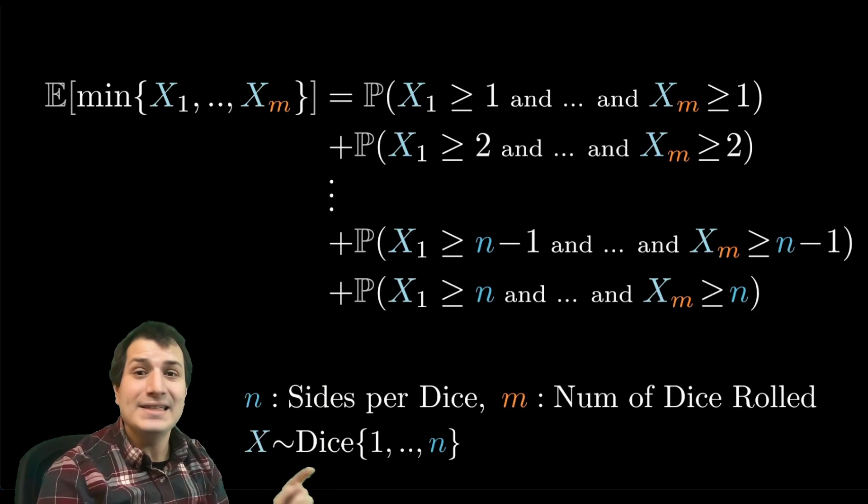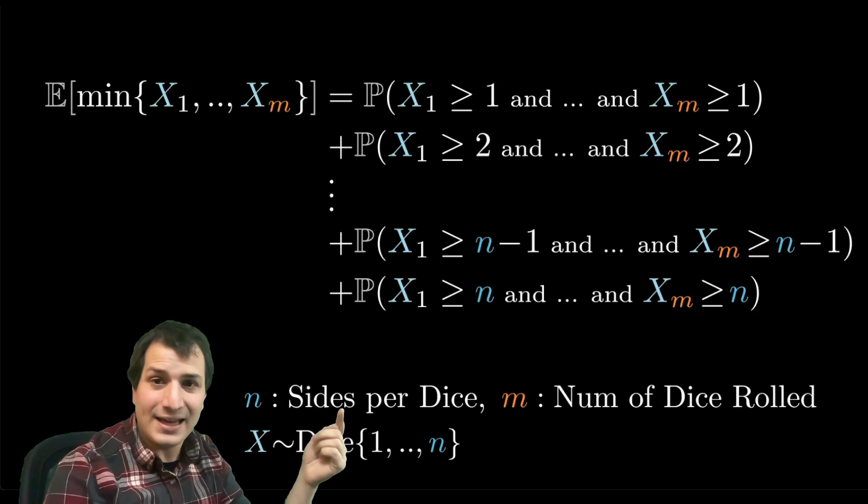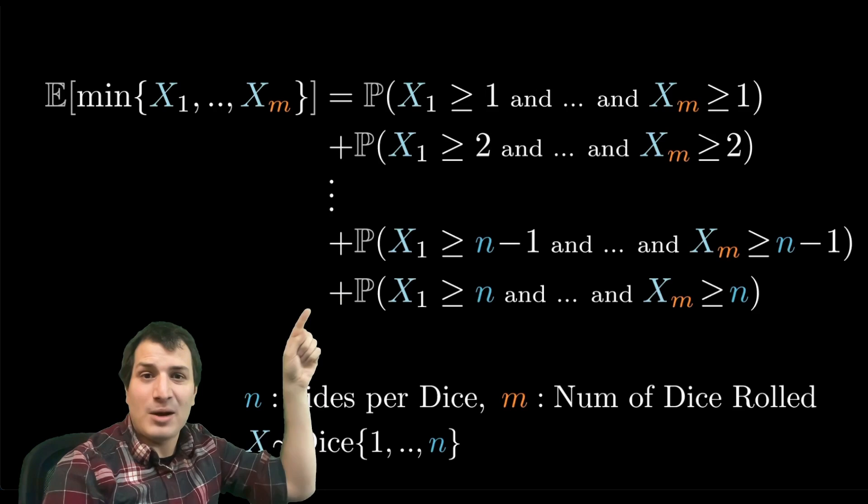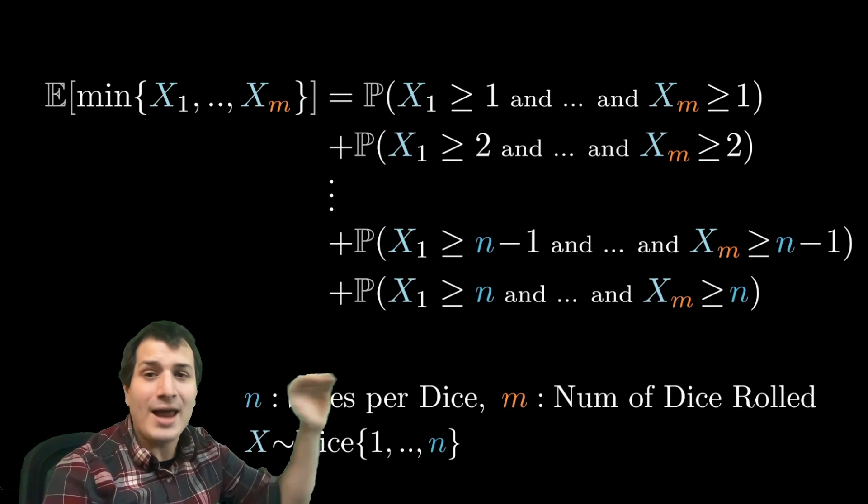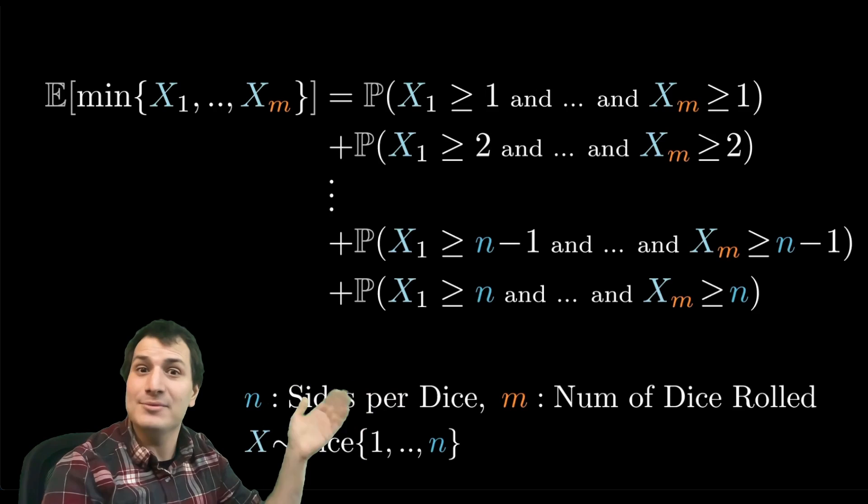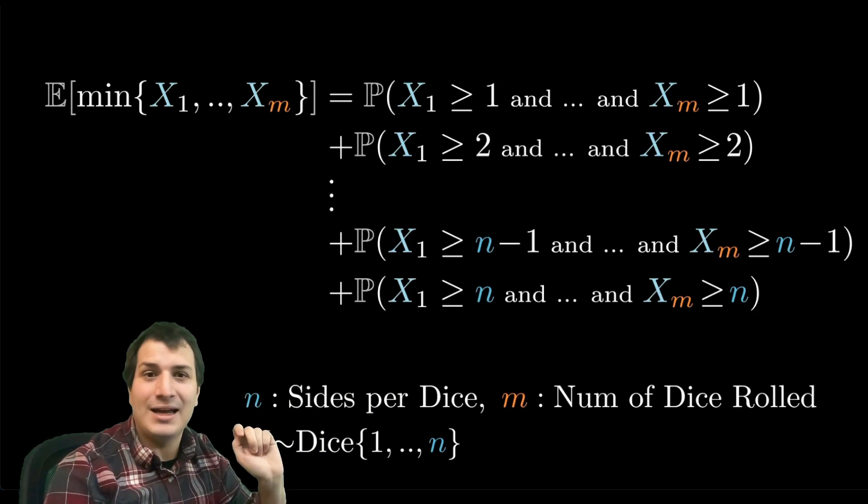Finally, we can use the fact that all the dice rolls are independent. If you're asking for the probability that x1 does something and x2 does something and x3 does something, you just multiply all those probabilities. So each of these probabilities will be a product of m different terms. In this case, it's the product of the same thing m times in a row, so you multiply all of these things by themselves m times—that's something to the power m.